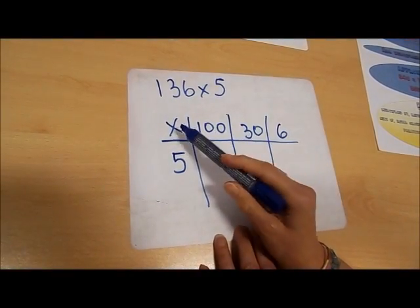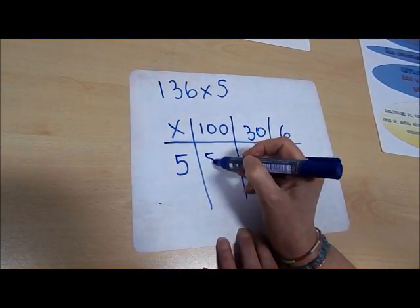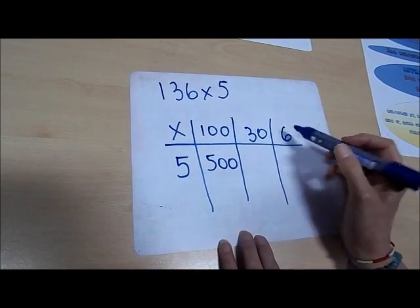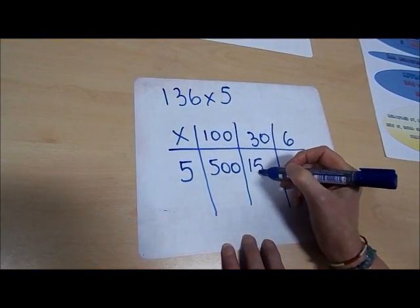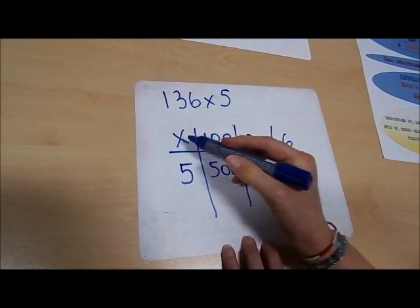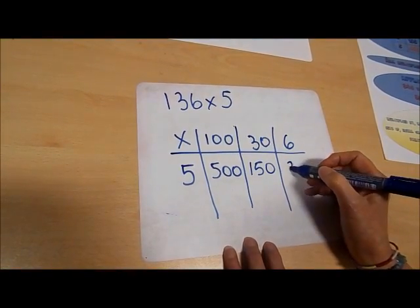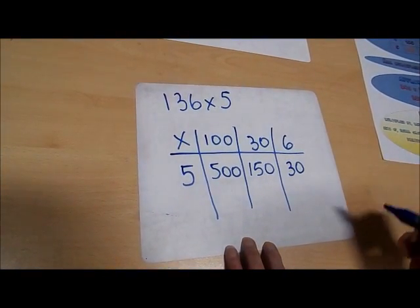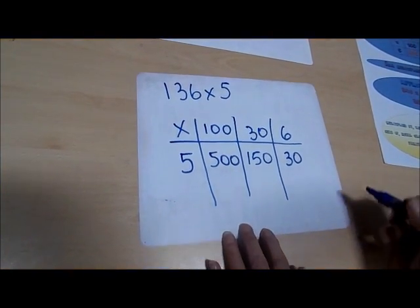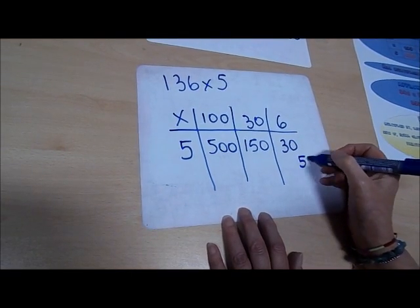So 100 multiplied by 5 is 500, 30 multiplied by 5 is 150, and 6 multiplied by 5 is 30. So as before, I have to add my numbers together. I've got 500, 150, and 30.